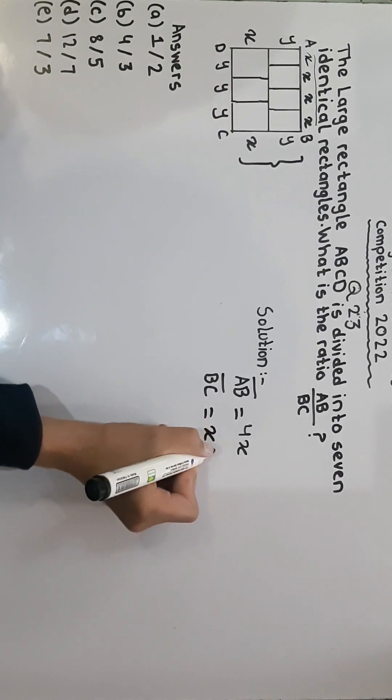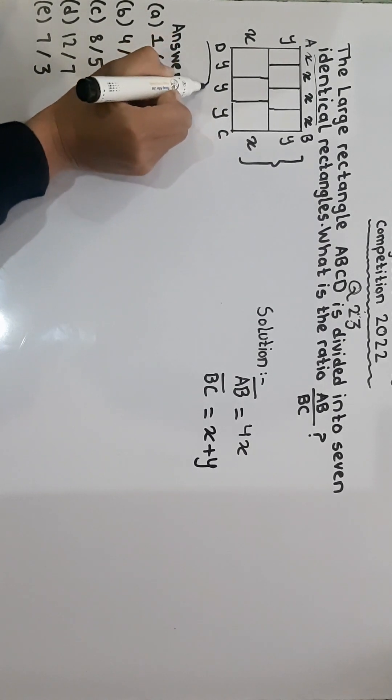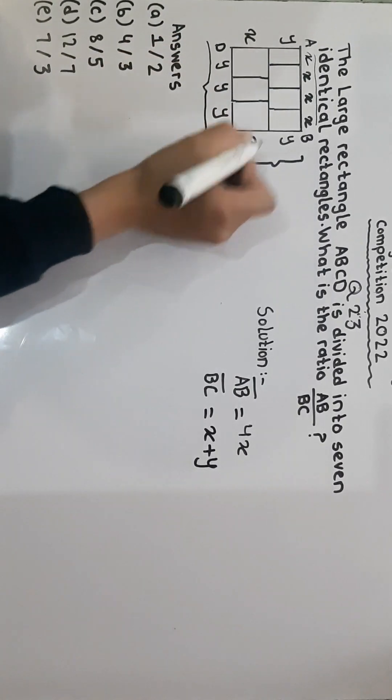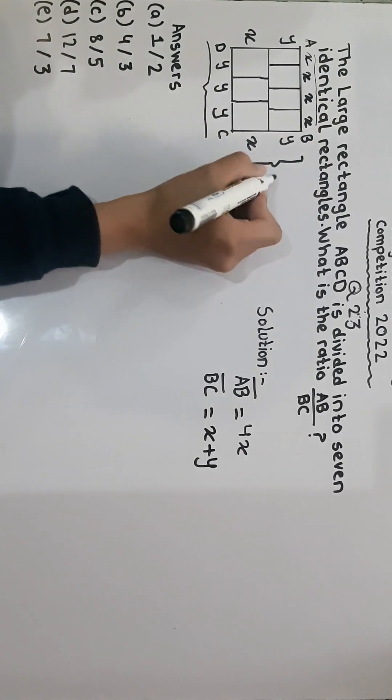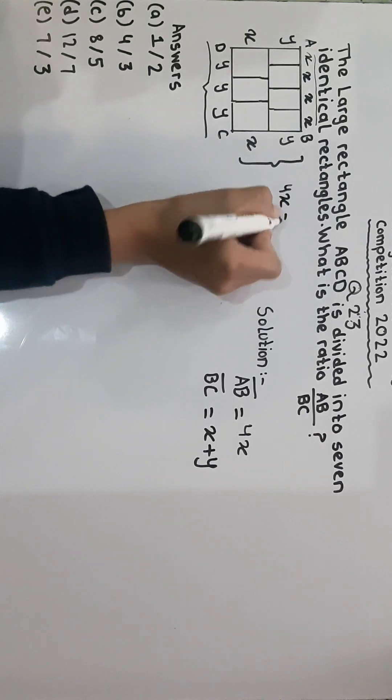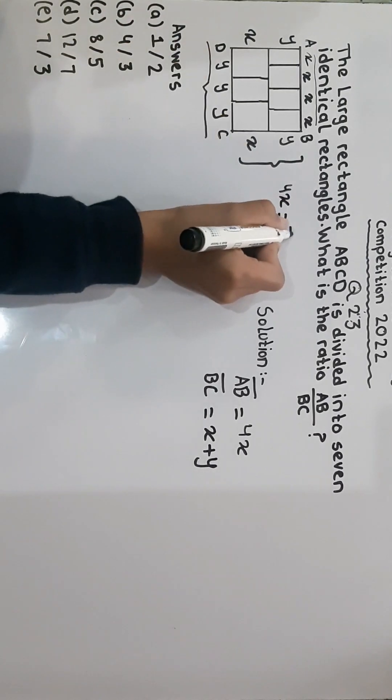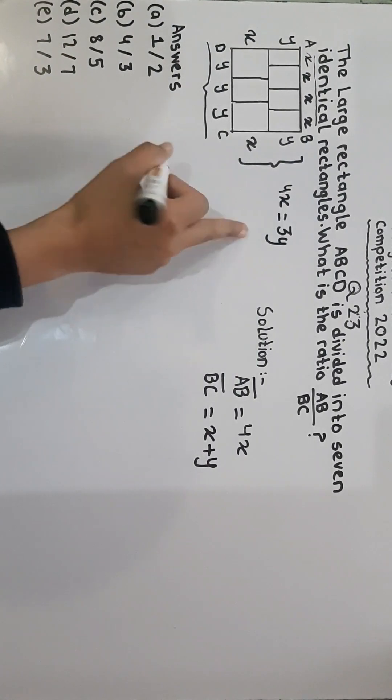We will write X plus Y. And this also establishes a relationship between them, which is 4X is equal to 3Y. We will use it after some time because it will help us.